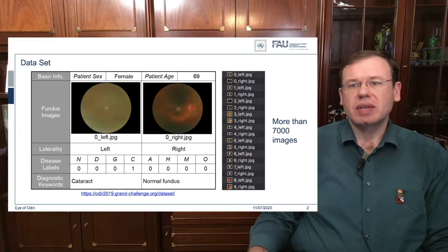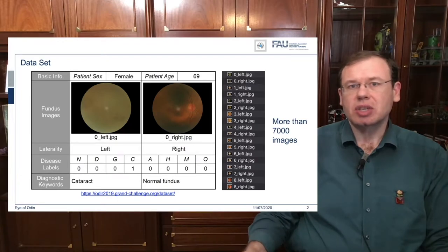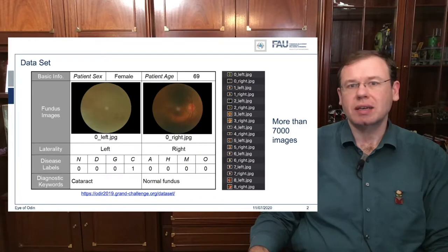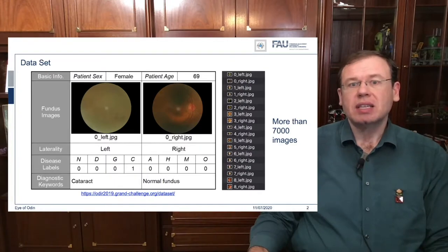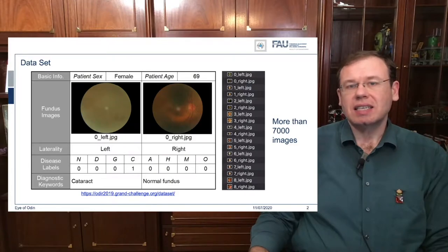We were using data from the Odin Grand Challenge and we look into the fundus imaging, the background of the eyes. We were interested in different diseases of the retina. The nice thing about this database is that it has more than 7,000 images. So we were using those images in order to test an idea for generating labels with gamification.